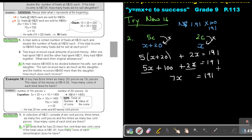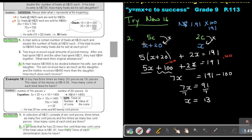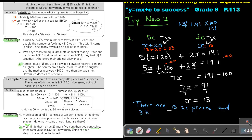So 5X plus 2X gives 7X. Subtract 100 from both sides: 7X equals 91. Divide by 7, and the value of X is 13. So the 2-cent pieces is 13, and the 5-cent pieces is 13 plus 20, which is 33. End with the sentence: there are 13 two-cent pieces and 33 five-cent pieces, and that's the answer.